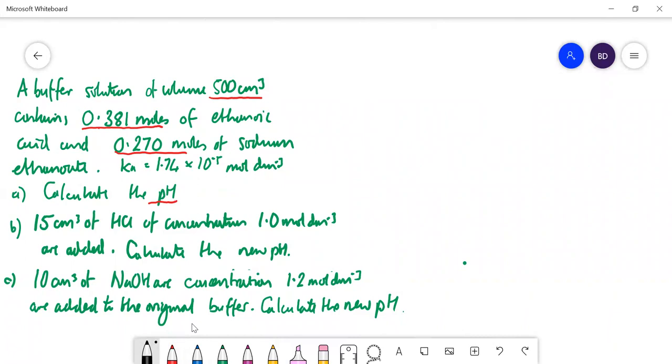So let's calculate the pH of the buffer solution. We're going to do H+ is equal to Ka times HA over A- concentration. Now, what is the concentration of HA? It's moles over volume. We know how many moles we've got. We've got 0.381. Let's call the volume V because they'll cancel out.